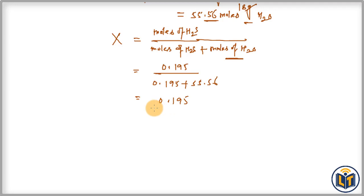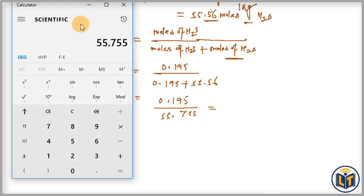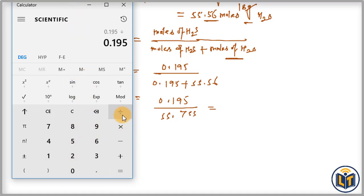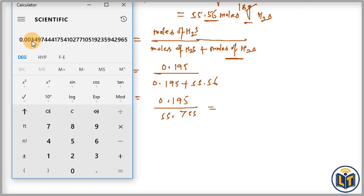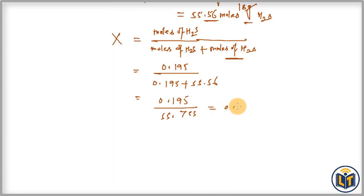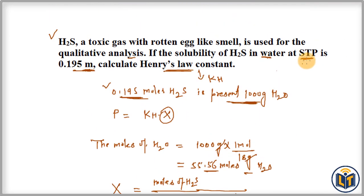At the top we have 0.195, and at the bottom we have 55.755. Dividing these values gives us the mole fraction of solute: 0.195 divided by 55.755 equals 0.00350. So the mole fraction of the solute H2S is 0.00350.